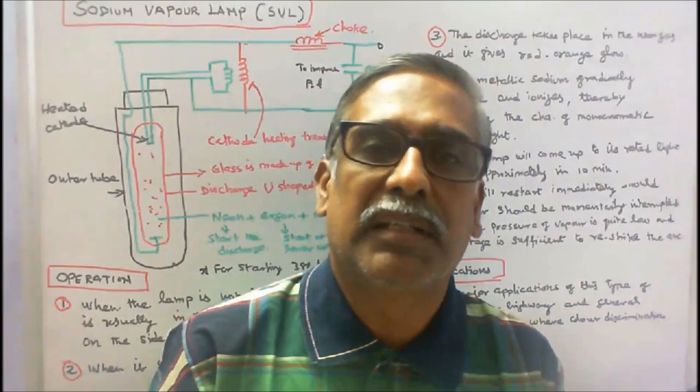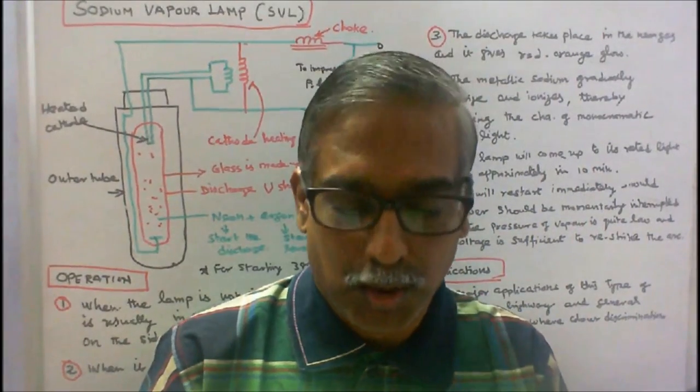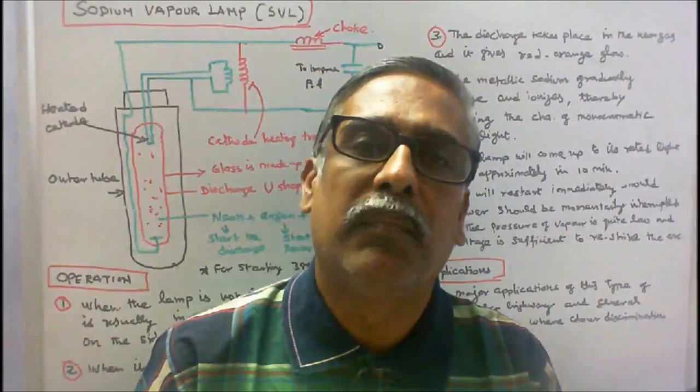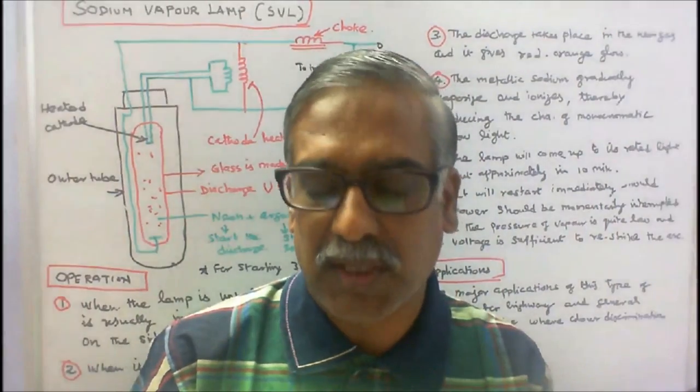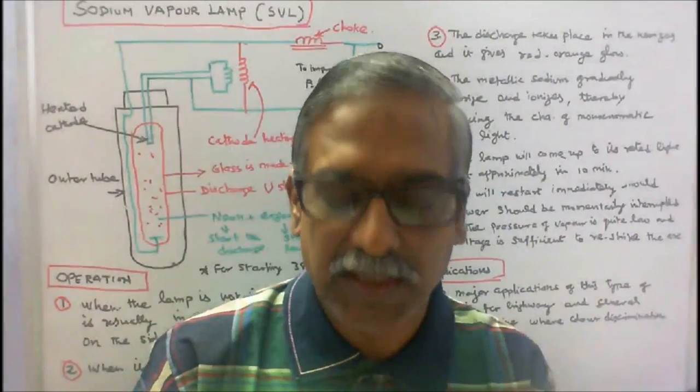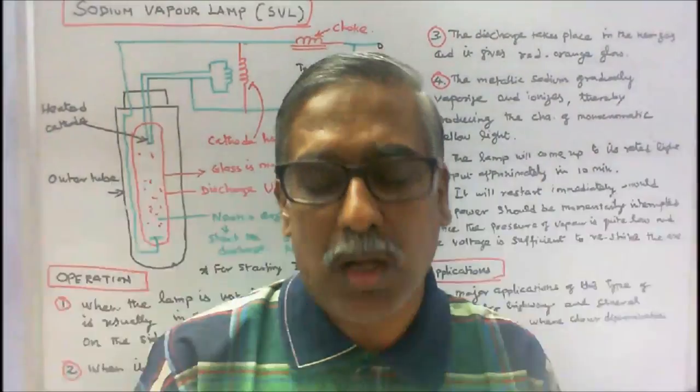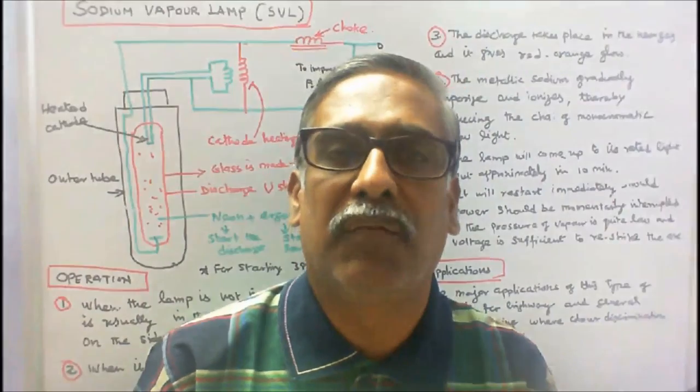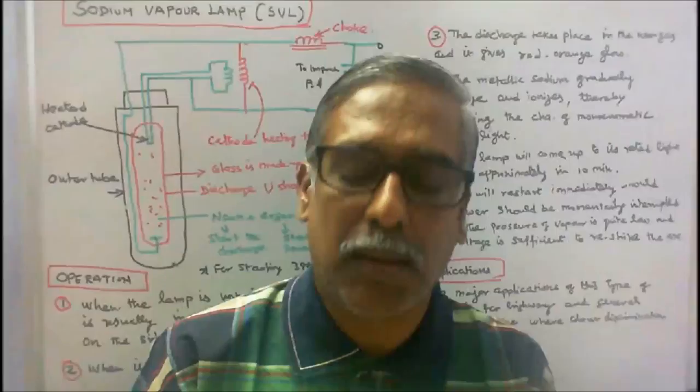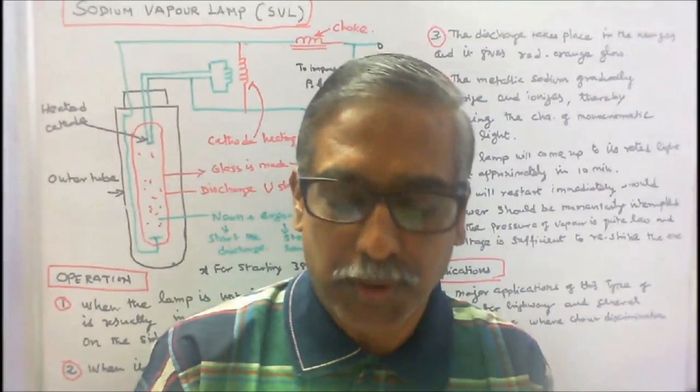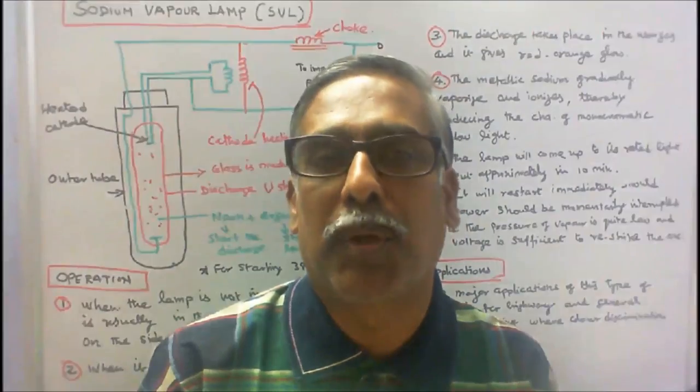This class we discuss about the operation of Low Pressure Sodium Vapor Lamp. Low Pressure Sodium Vapor Lamps were first invented in 1920 by Arthur H. Compton at Westinghouse, United States of America. It is a gas discharge lamp that uses sodium in an excited state to produce light.